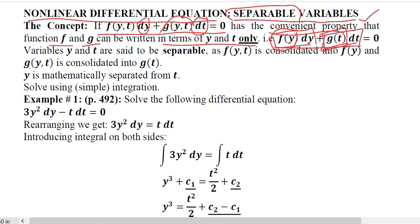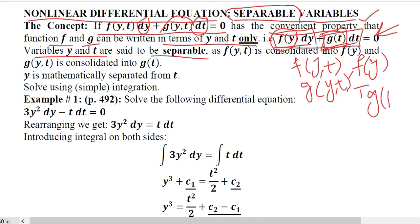In that case, if it is possible, if we can rewrite in this form, then we can say that variables y and t are said to be separable. Yes, they have been separated from each other because initially they were combined in one function and combined in the other function as well. But now we have separated them into a form with only one variable, y and t respectively.